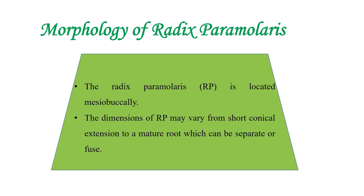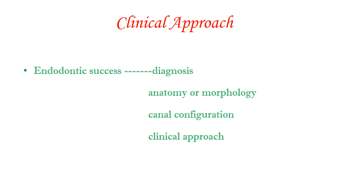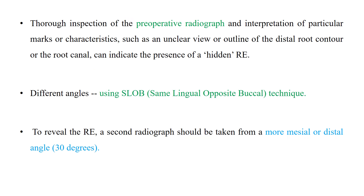Radix paramolaris is located mesiobuccally, and its dimensions vary from a short conical extension to a mature root, similar to radix entomolaris. For clinical approach, endodontic success depends on correct diagnosis, understanding anatomy and morphology, canal configuration, and the clinical approach taken. Diagnosis is made from preoperative radiographs, where an unclear outline of the distal root contour can indicate a hidden radix entomolaris or paramolaris.